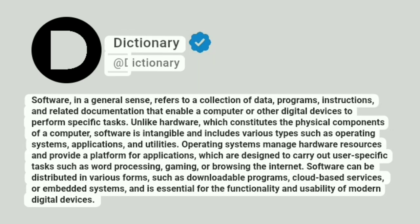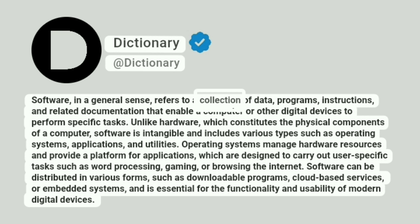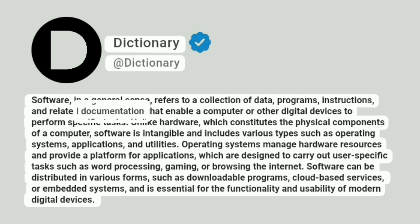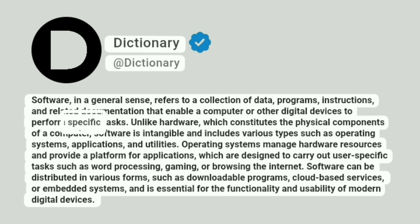Dictionary. At Dictionary. Software, in a general sense, refers to a collection of data, programs, instructions, and related documentation that enable a computer or other digital devices to perform specific tasks.